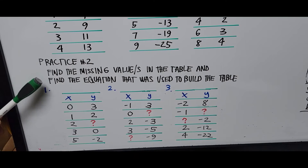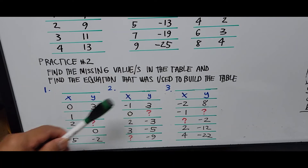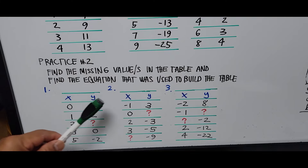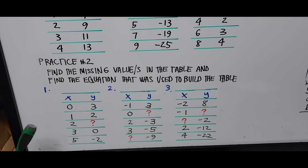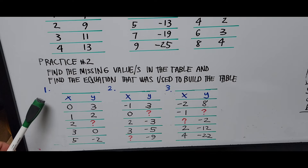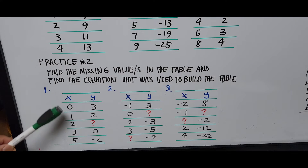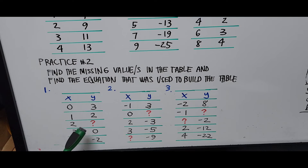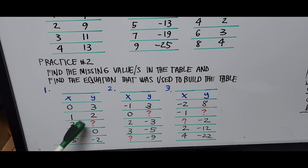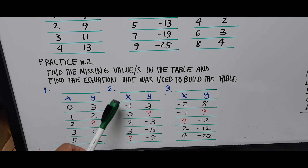On practice number two, find the missing value or values in the table and find the equation that was used to build the table. You have three practice problems — number one, number two, number three. On problem number one, you have one missing value that you need to find, and also find the equation of the line that was used to build this table.